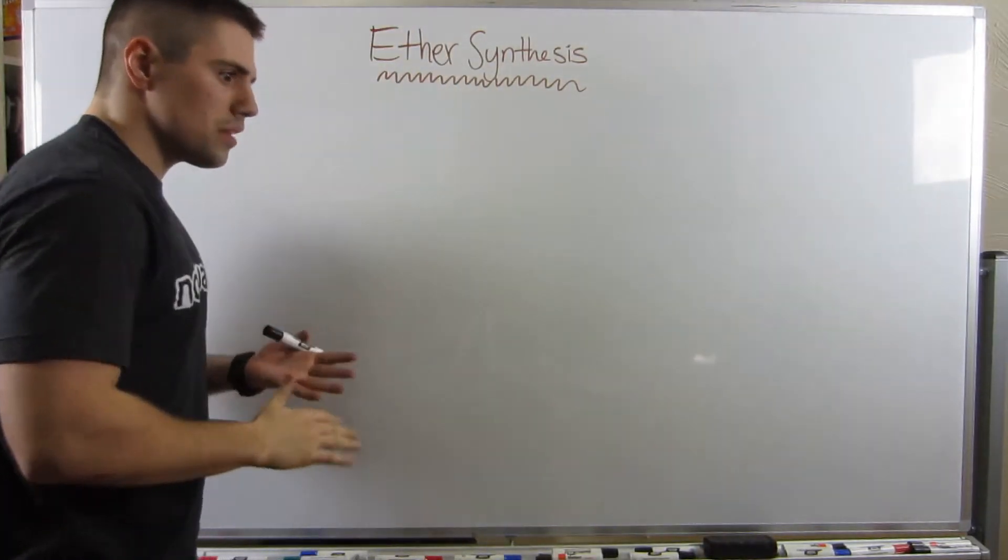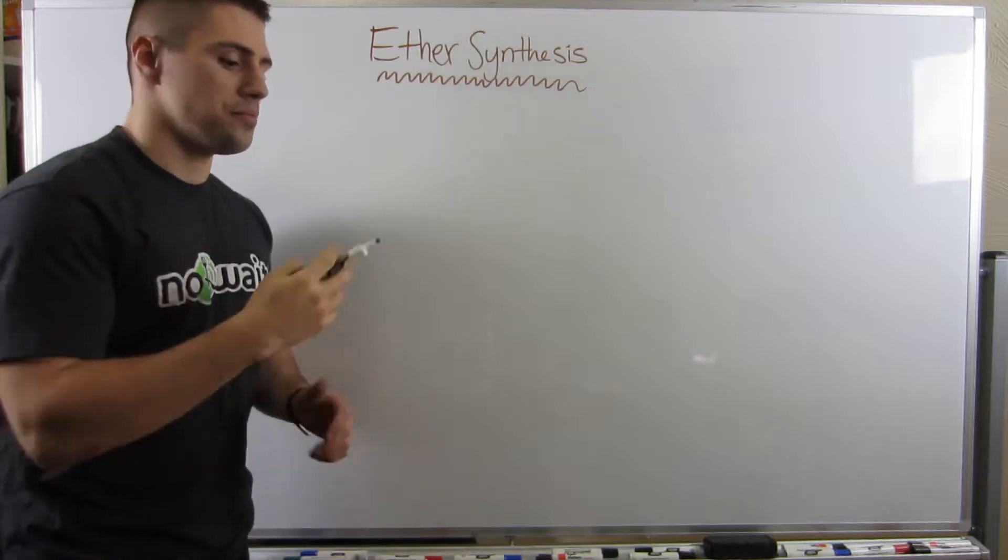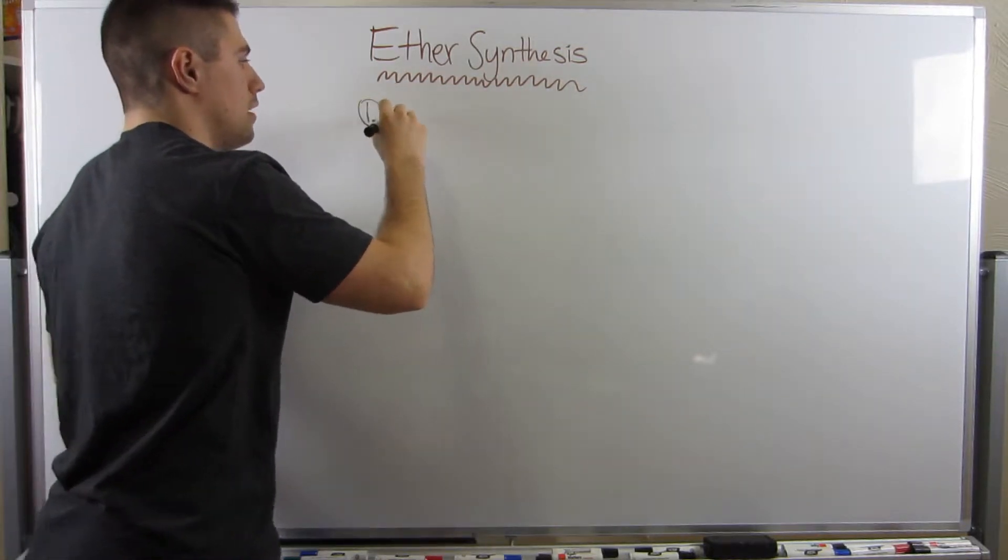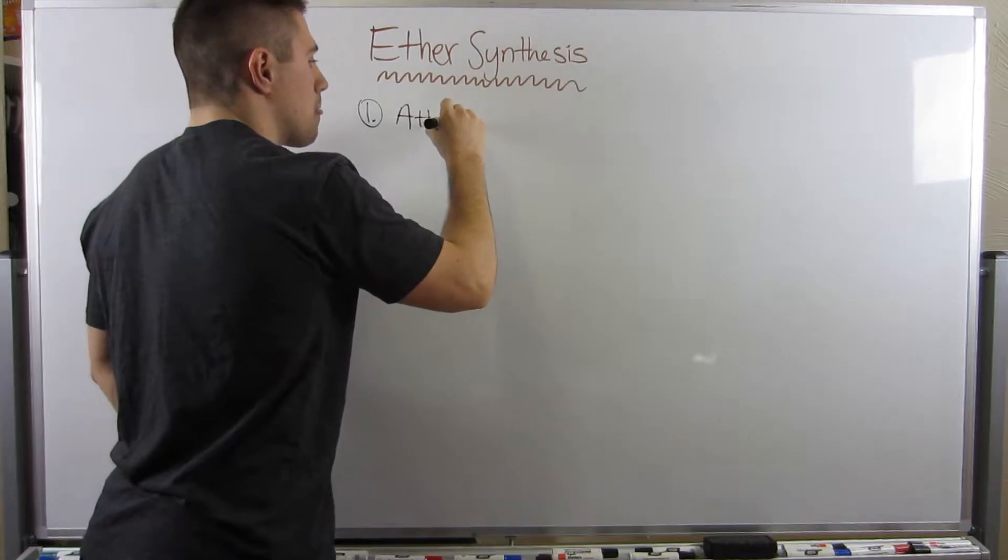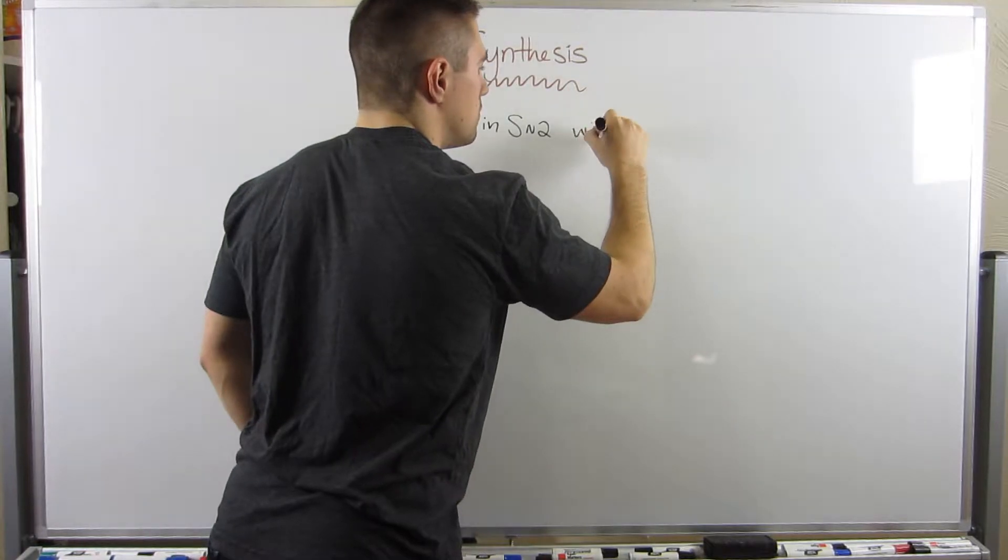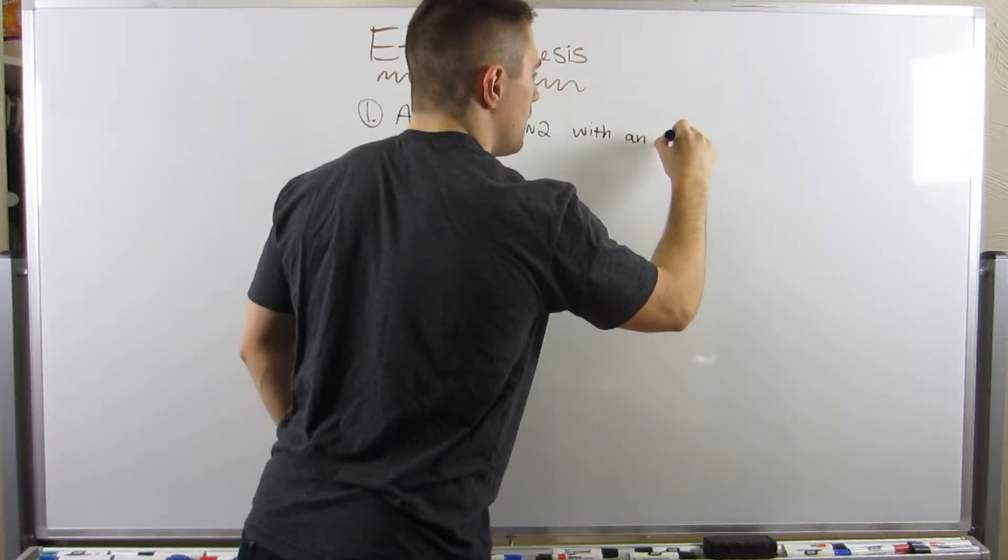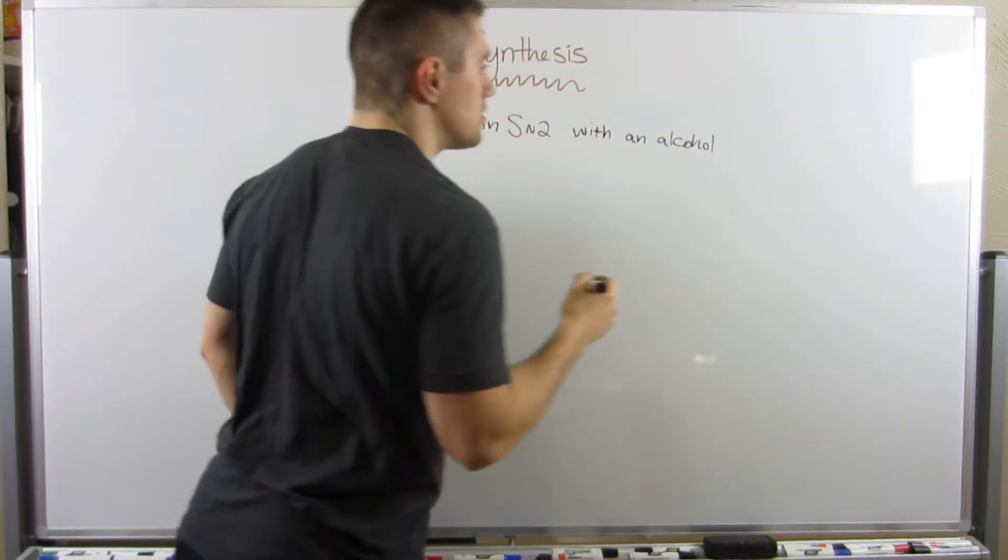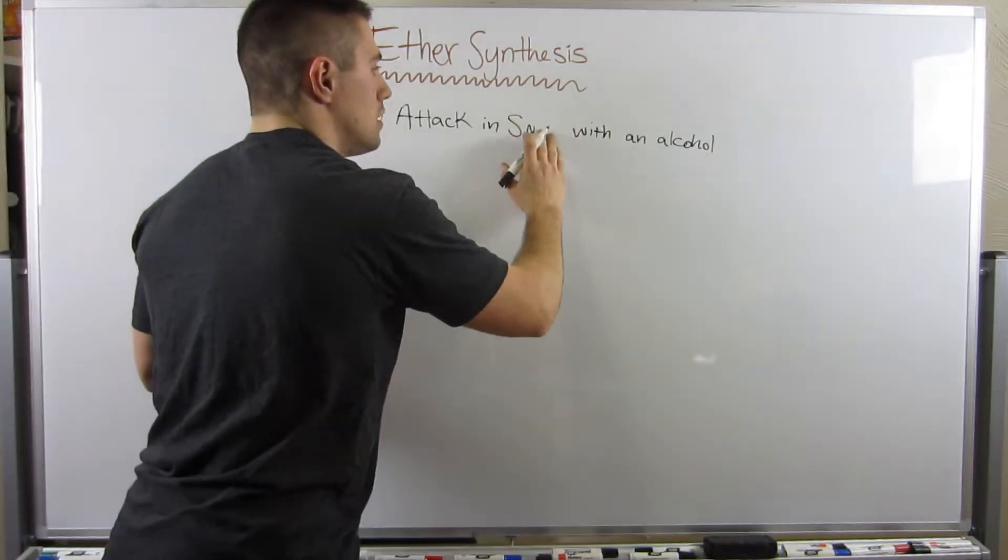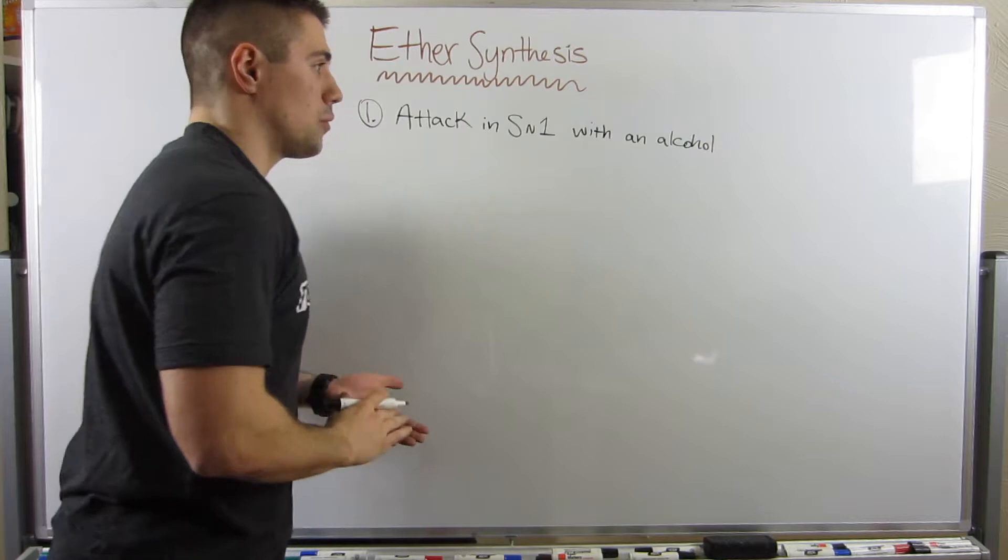These are both symmetrical ethers, or we can have non-symmetrical ethers. We can have something like a methyl on this side and an ethyl on that side. Okay, so that's enough of a trip down memory lane as far as identifying the functional group, but let's figure out how we can make them.